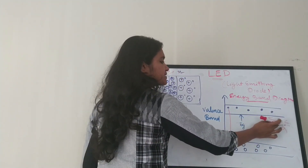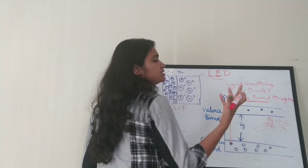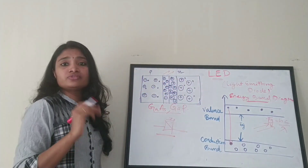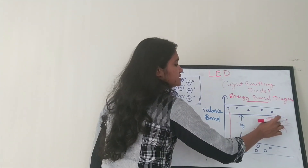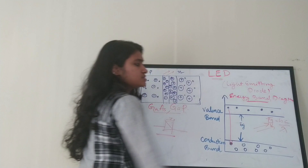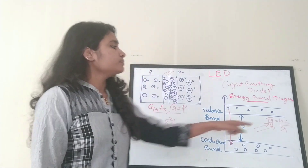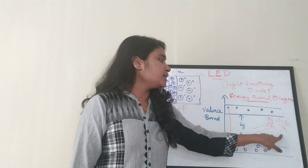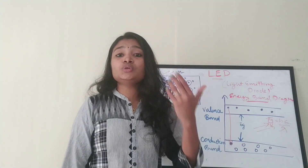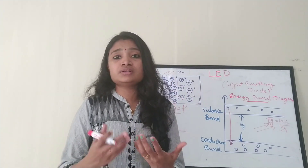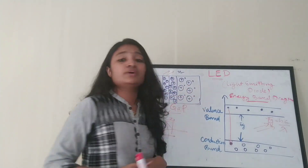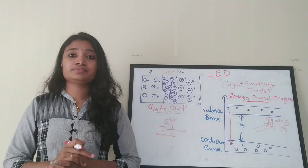Here, h is Planck's constant, c is the speed of light, and λ is the wavelength of light. The variation in Eg will vary λ, because the other two are constants. Based on this energy band gap, the wavelength of the light varies, and due to the variation in wavelength, different colors of light are emitted. This is actually what happens in the case of a light emitting diode.